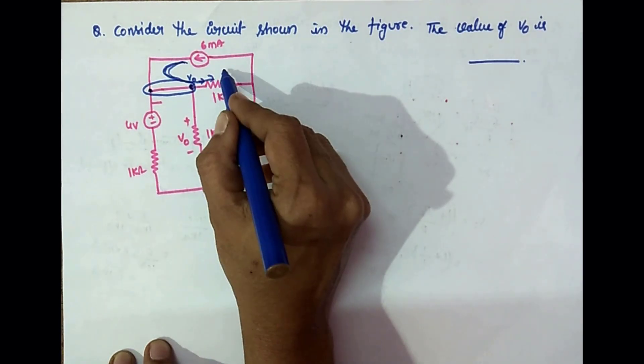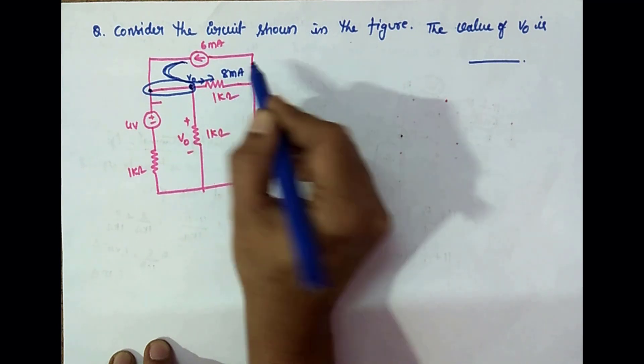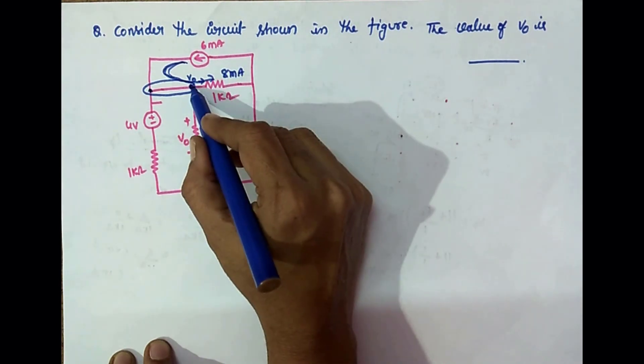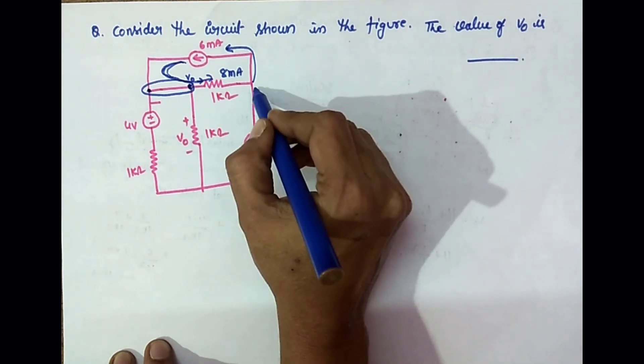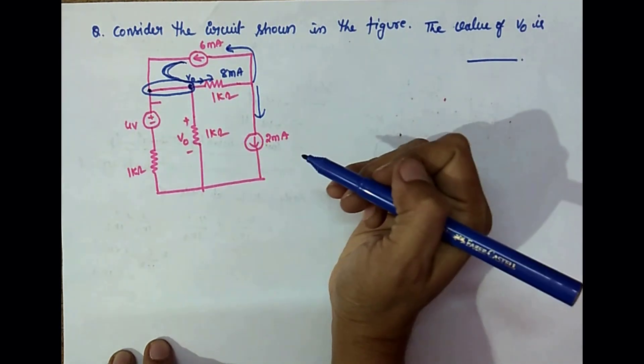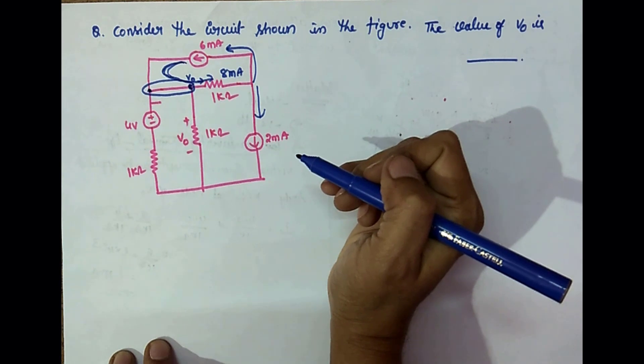And this node, totally 8 mA current is flowing. After reaching this node, it gets divided like this: it is 6 mA and this is another 2 mA.